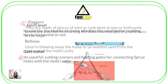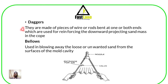Then we have daggers, which are usually made of pieces of wire or rods bent at one or both ends. These are specifically used for reinforcing the downward projecting sand mass in the cope. Then we have bellows — B-E-L-L-O-W-S — which are used for blowing away loose or unwanted sand from the surfaces of the mold cavity. It has a nozzle, an entrance for air, and a valve. When you squeeze the handles the valve closes; when you open the bellows wide that is the entrance for air to blow out unwanted sand.